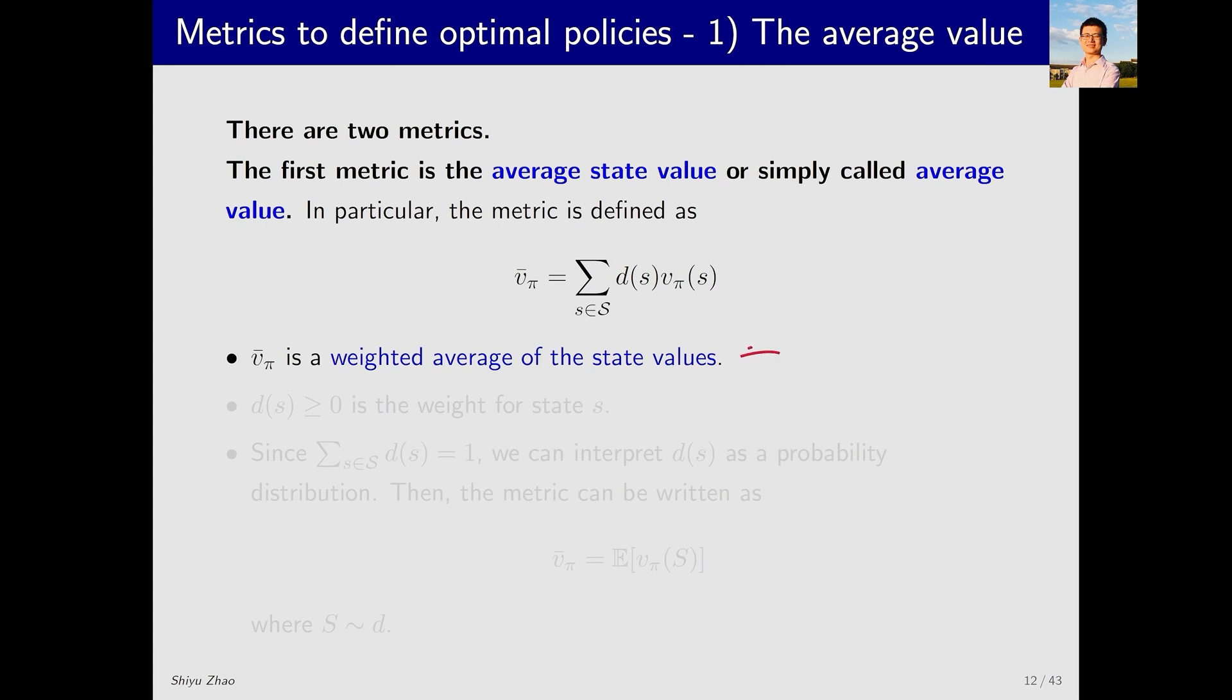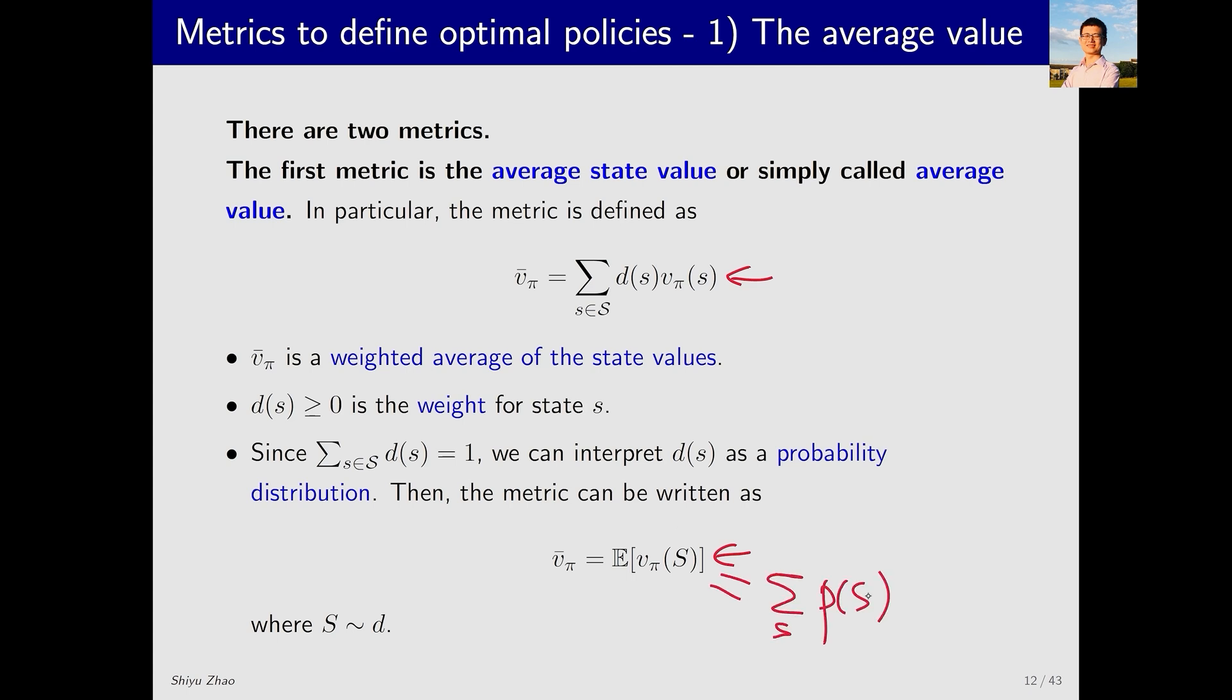v̄π is a weighted average of state values. It is a very natural choice for a metric. d(s) is a weight, and the sum of d(s) over all states s equals one. In this case, d(s) can be understood not only as a weight, but also as a probability distribution. That is, d(s) represents the probability of state s being visited. In this context, the objective function can be written in this form. This is based on the definition of expectation. It equals Σₛ p(s)vπ(s), where p(s) is the probability of selecting state s. Here, p(s) corresponds to d(s), so these two expressions are the same.